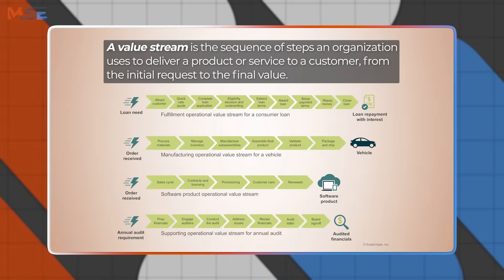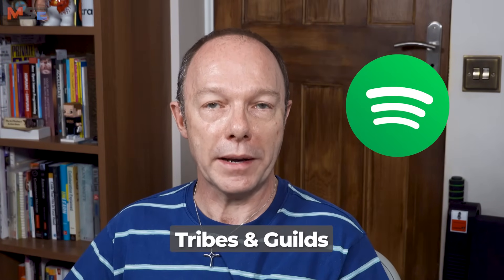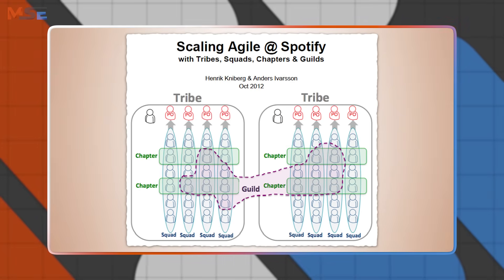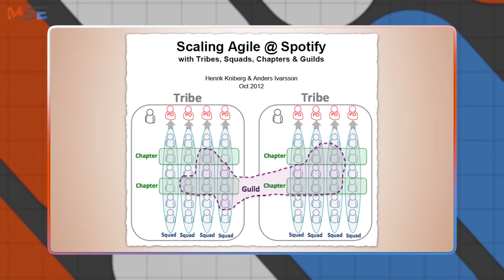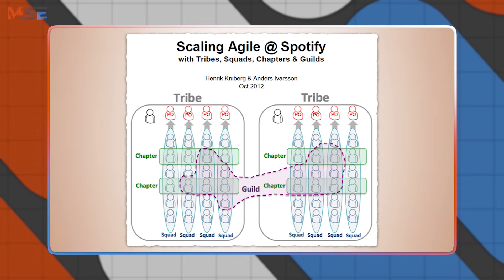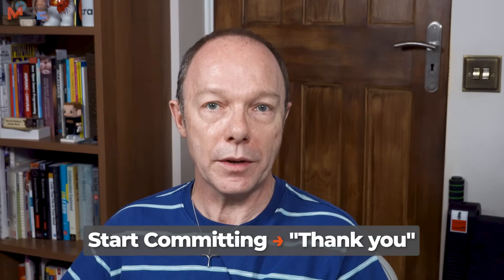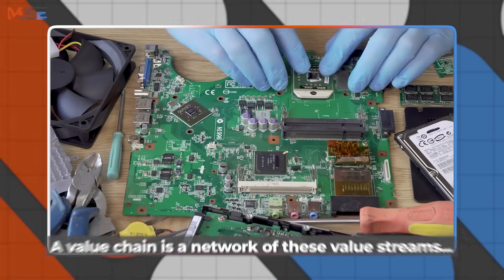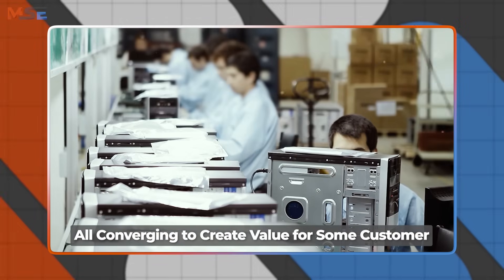The idea of value streams and value stream mapping has been around since at least the 1950s, but they came to prominence in the software world when Spotify started talking about tribes and guilds back in 2012. A tribe represented a customer-facing value stream, say recommendations or the Android player, and a guild was a virtual community across the tribes representing all the testers. Then the team topologies folks popularized the term with their value stream aligned teams. The value stream is the sequence of work including materials, information, resources, people and knowledge that contribute to creating value — from when you commit to doing something, to the point you hear, thank you.